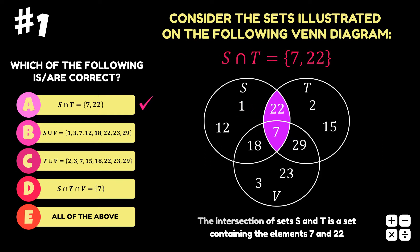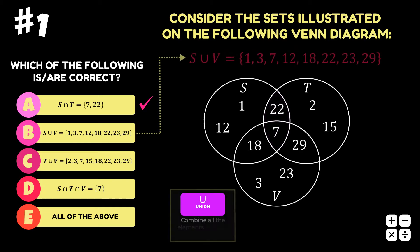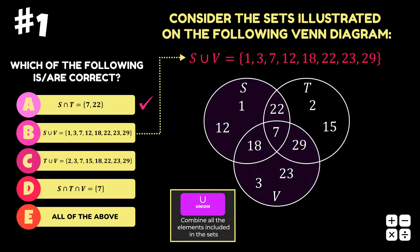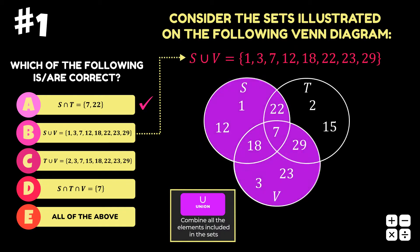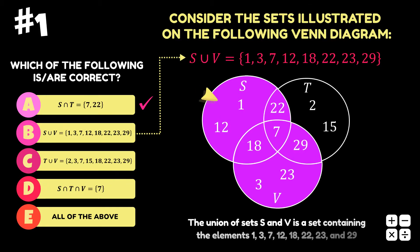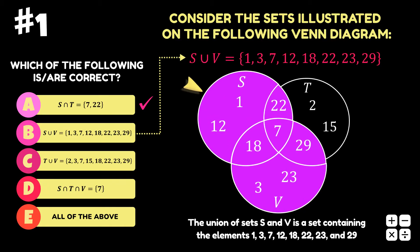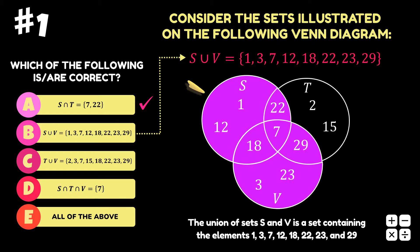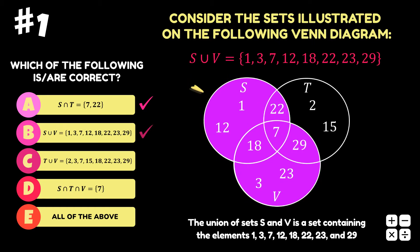Option B is the union of sets S and V. Looking at the Venn diagram, the union of sets S and V is the area occupied by both of these sets, and the elements in this combined area are 1, 3, 7, 12, 18, 22, 23, and 29. Therefore, option B is correct.